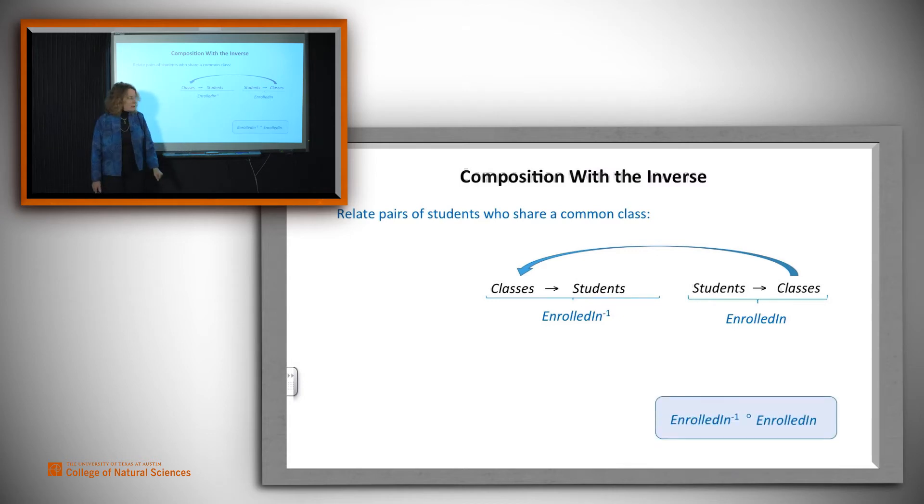So we write what we need this way: enrolled-in inverse composed with enrollment. Let's just quickly see how this works. Suppose this is a tiny piece of our database, so Cary is related to 52665.